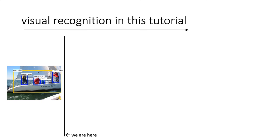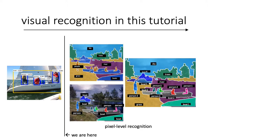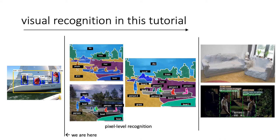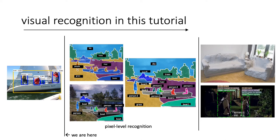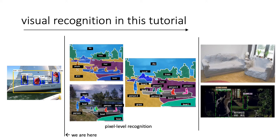In the previous talk, Ross covered the problem of finding objects on an input image and delineating them with bounding boxes. In this talk, I'll introduce a set of pixel-level recognition tasks. Given an image, the aim is to get a pixel-level mask for objects or scenes. My talk is focused on the 2D image plane and pixels on it. If you're interested in video or 3D recognition, they will be covered in separate talks.